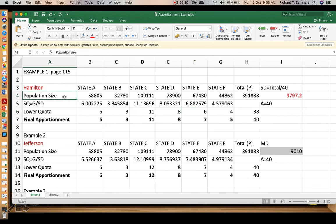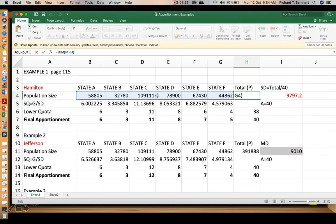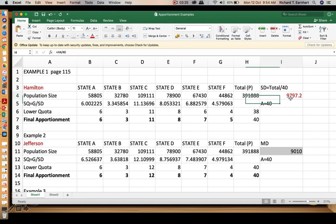Under Hamilton, we have the first row would be population size. You can check the total by taking the sum of these. To compute for the standard divisor, we select the total divided by the value of A, which is 40. This will be your standard divisor.